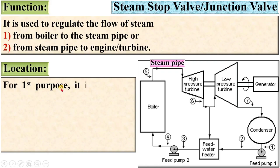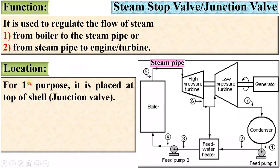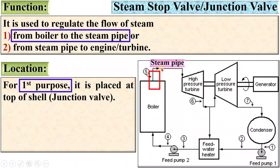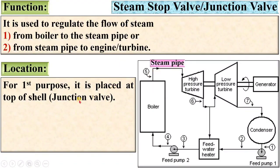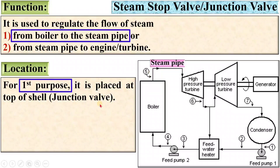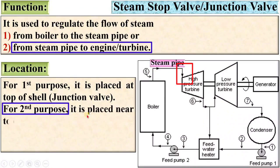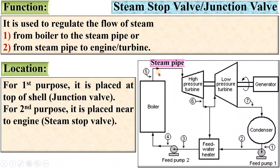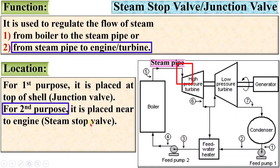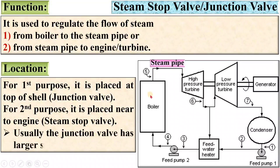Now let us see the location of the steam stop valve. For the first purpose — that is, to regulate the flow of steam from the boiler to the steam pipe — it is generally called the junction valve and is placed at the top of the shell. For the second purpose — regulating the flow of steam from the steam pipe to the engine or turbine — it is known as the steam stop valve. Usually the junction valve has a larger size than the stop valve.